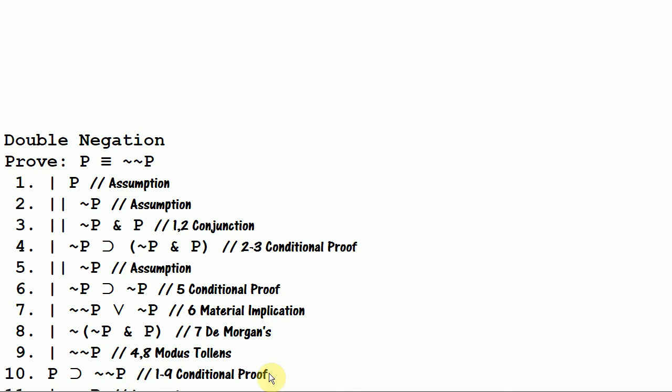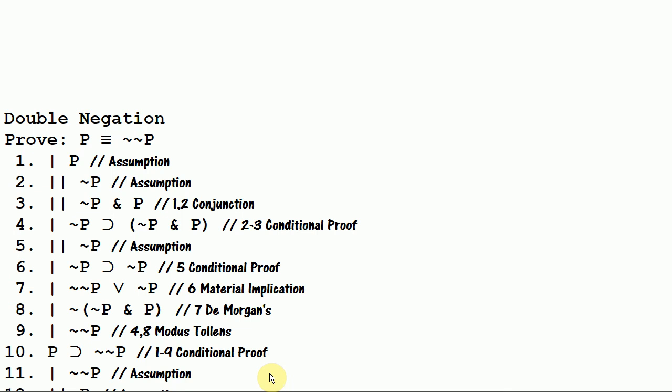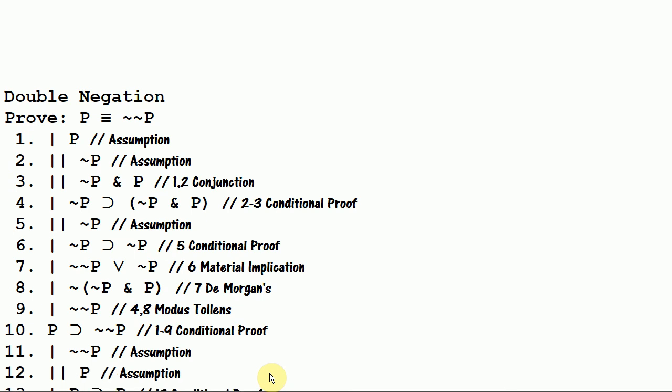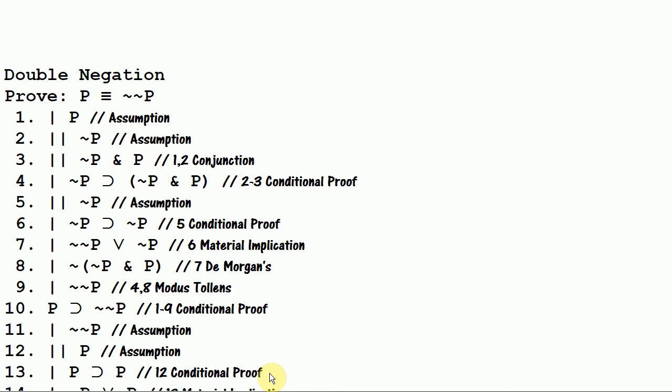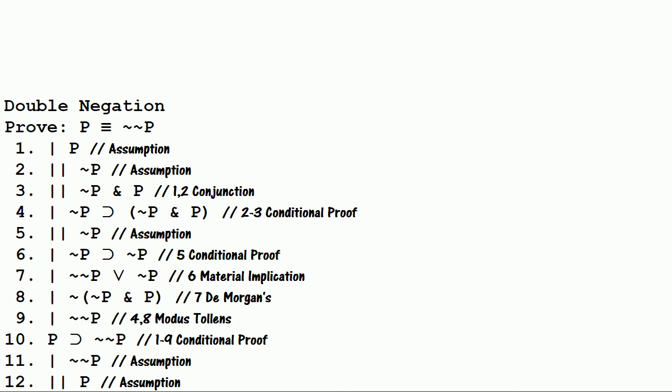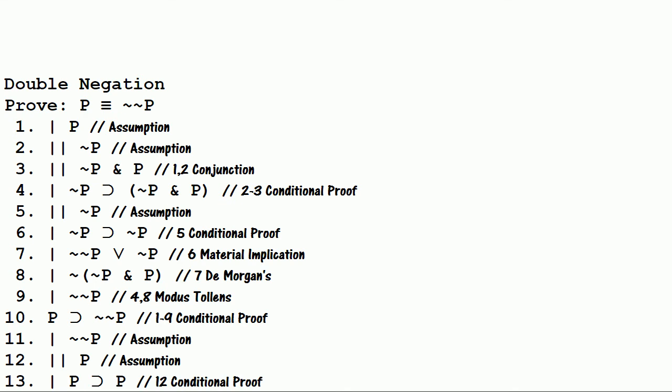And now I'm going to start with the assumption of not not P and try to get P. So what can I do here? Let's start by assuming P. And this is just a single line assumption. And I get through conditional proof if P then P.